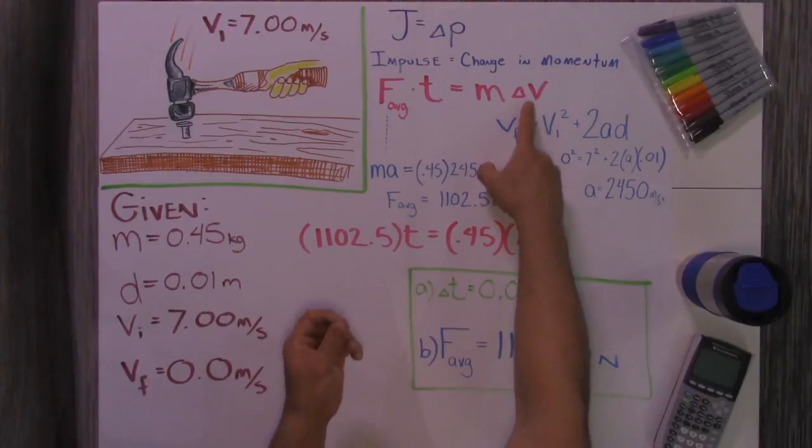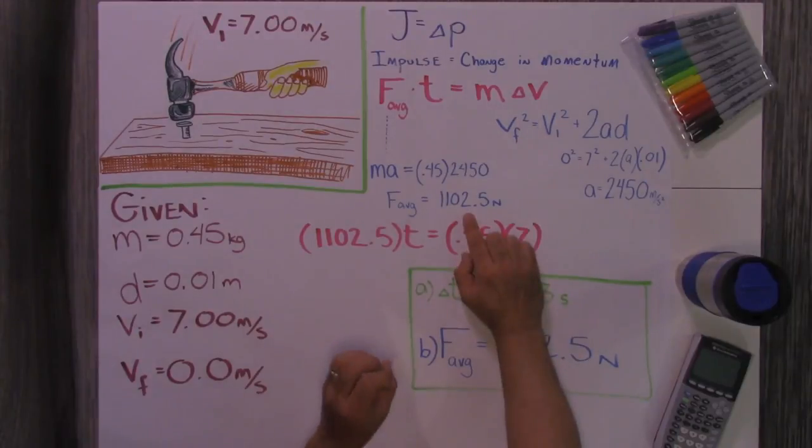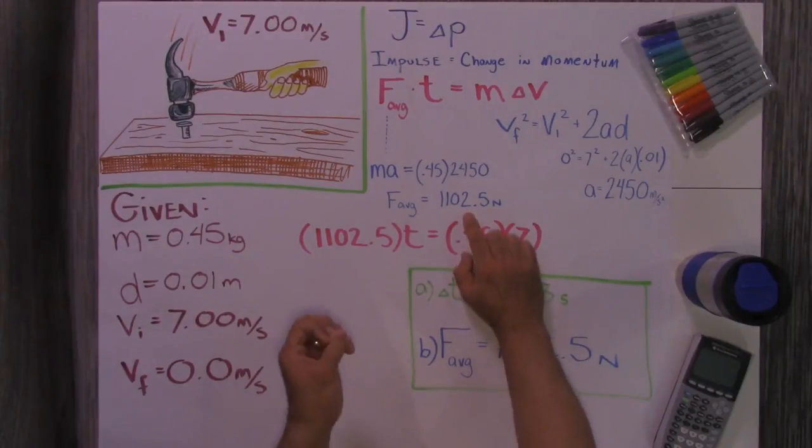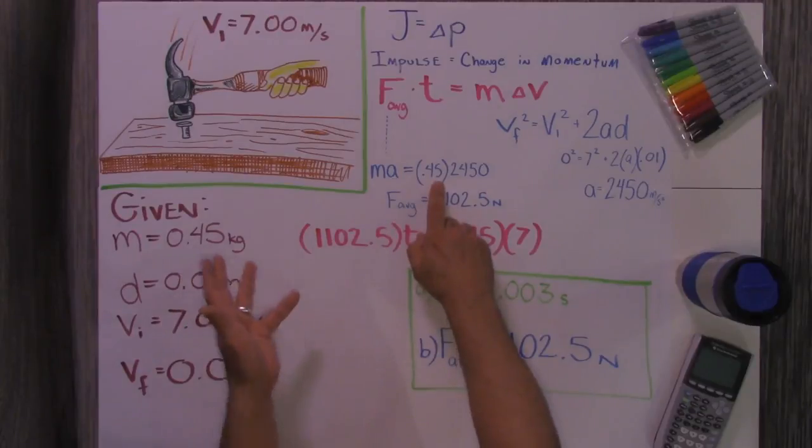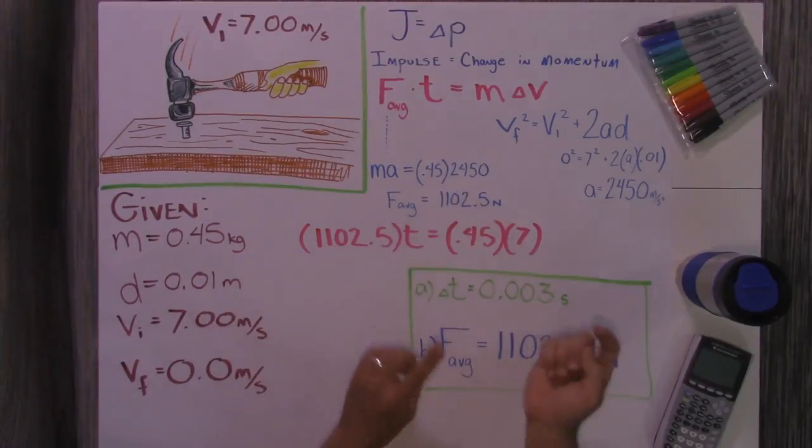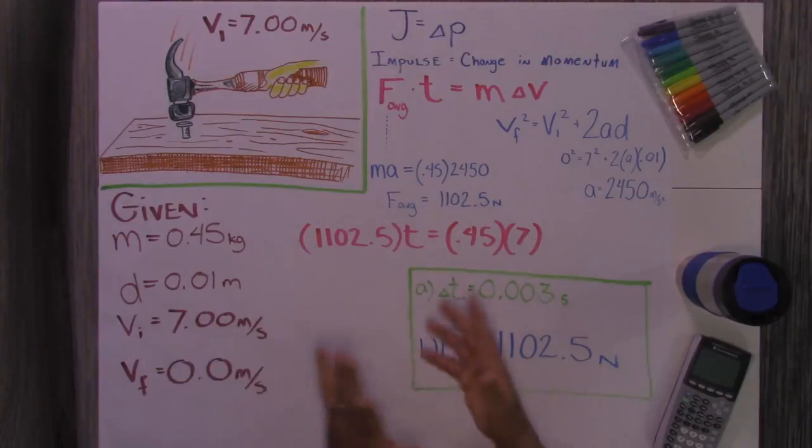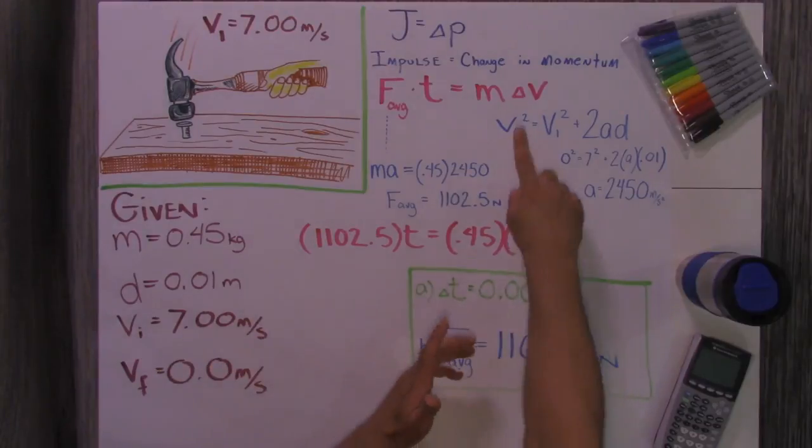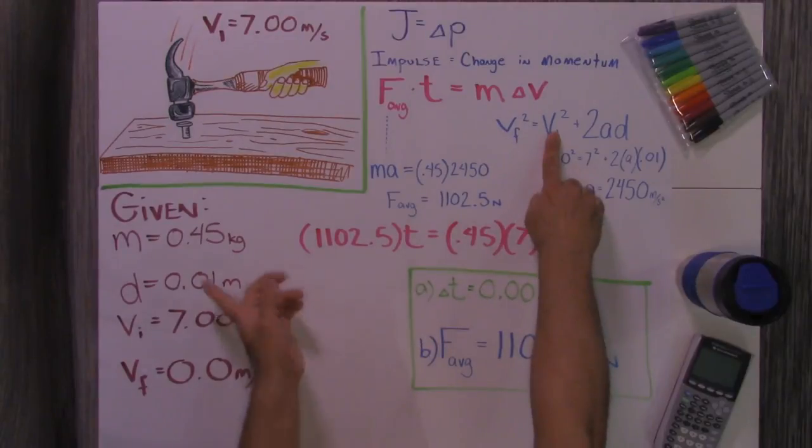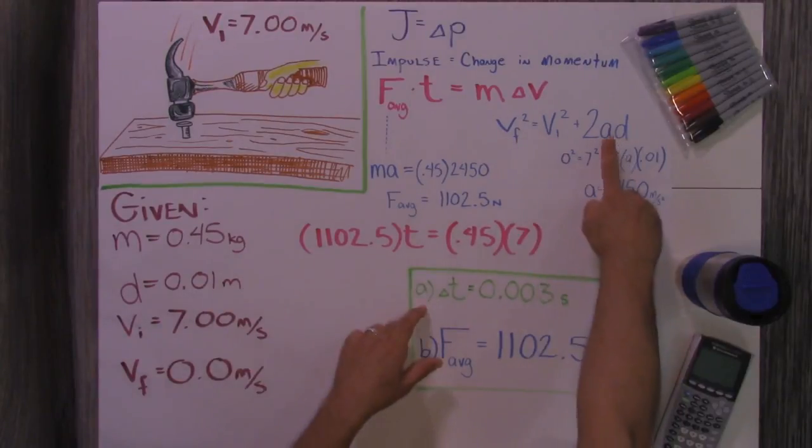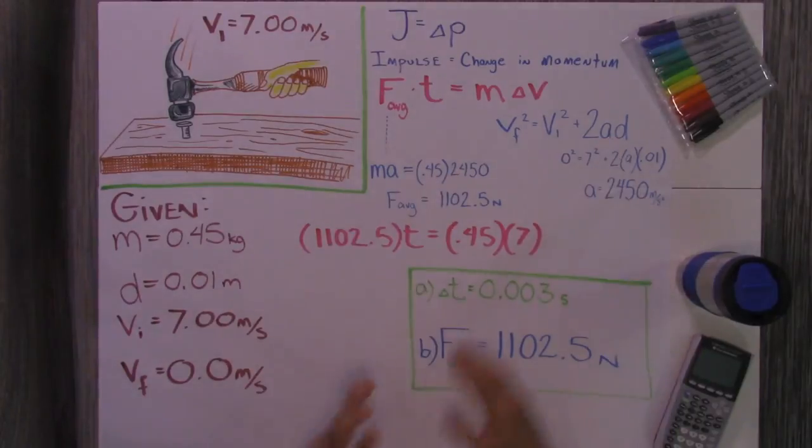The first thing I wanted to do is I wanted to find the average force. I knew that force was mass times acceleration. They told us the mass, but I didn't know the acceleration, so I went back to my formulas from week one, the kinematics formulas, because I knew the final velocity of the hammer is zero. I knew the initial velocity is seven. I don't know the acceleration, but when I do, I can multiply that by mass and I know the average force.